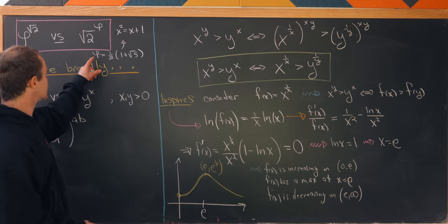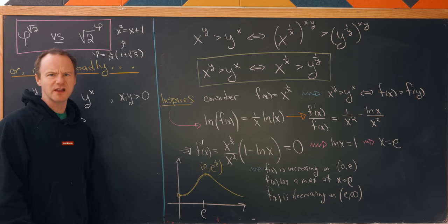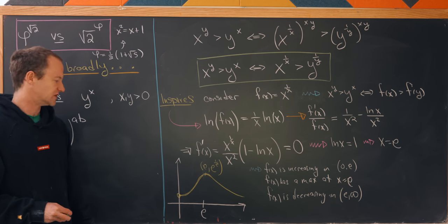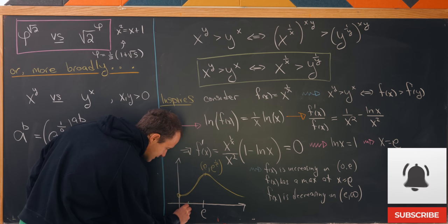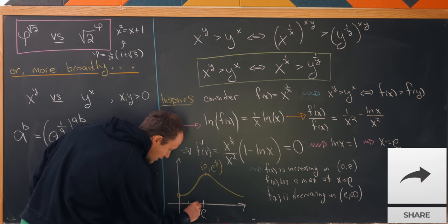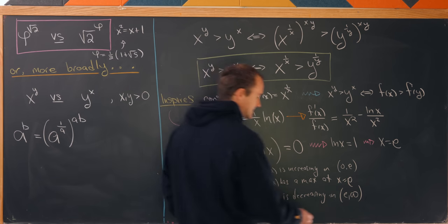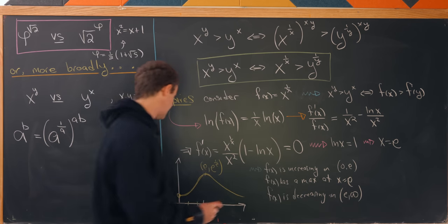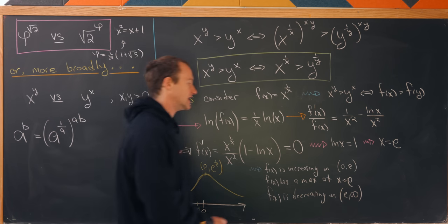And that's by noticing that phi is larger than the square root of 2. I'll let you maybe do a basic calculation to do that. That's not too hard to do. So that means we have the square root of 2 over here. We have phi over here. That puts phi and the square root of 2 in this region where f of x is increasing.